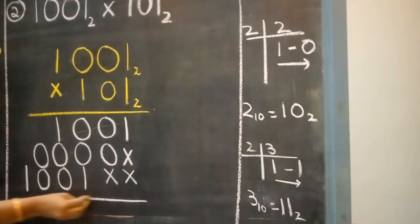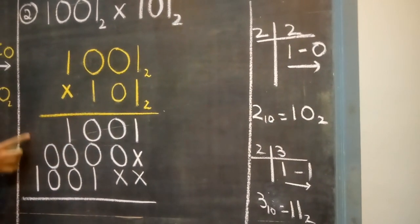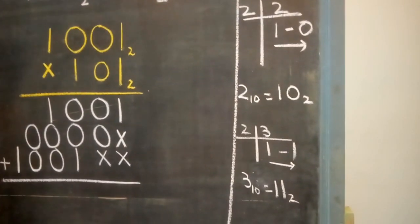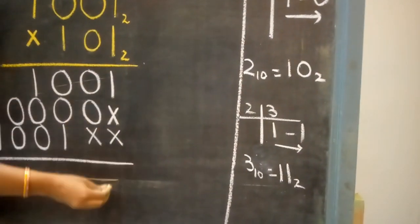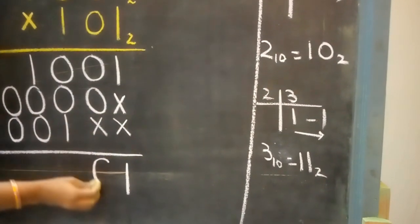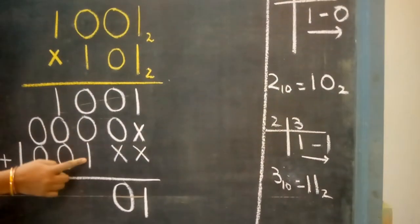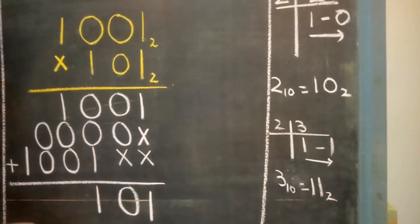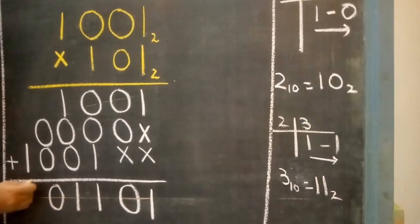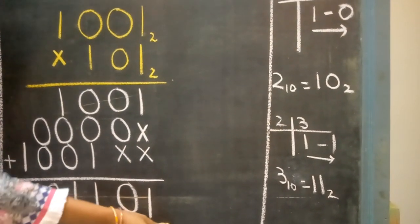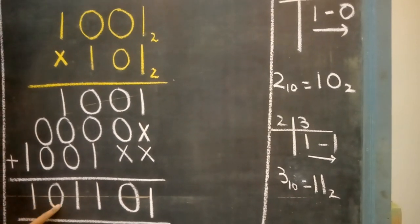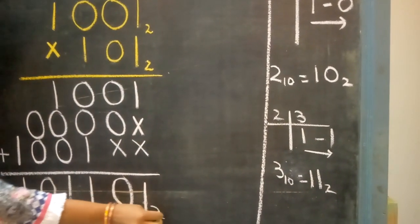Now we have multiplied all our three digits. Now we are going to add our binary numbers. Starting from the right hand side, 1 will be written as 1. 0 plus 0 is 0. 0 plus 1 is 1. 1 plus 0 is also 1. So our final answer is 1, 0, 1, 1, 0, 1 base 2.